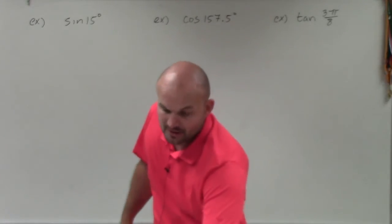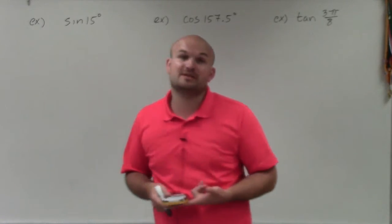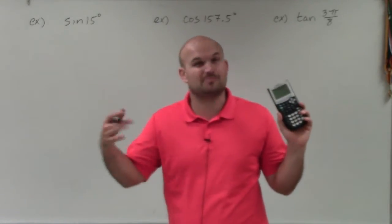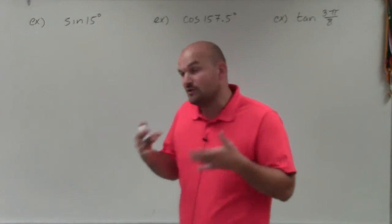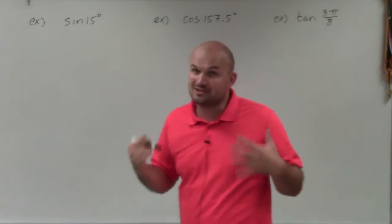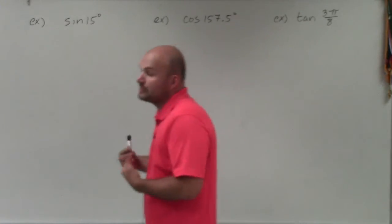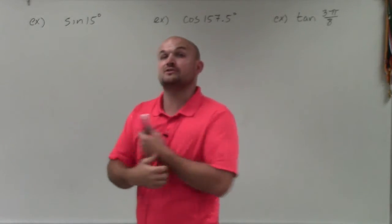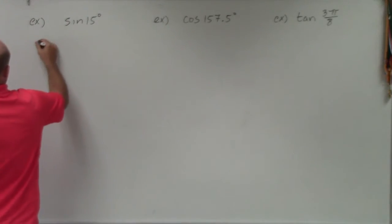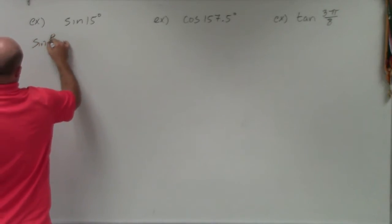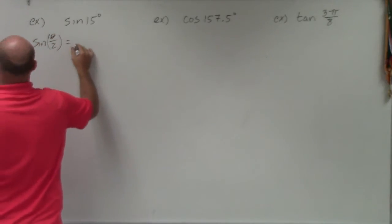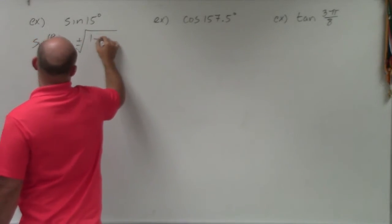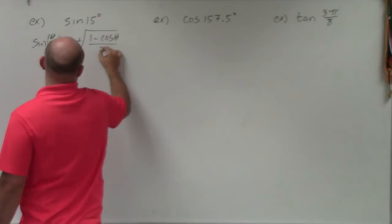So typically, either we could use sum and difference formulas, we could use double angle formulas, or we could plug it into our calculator to get the approximate answer. But if those don't work and we still need to get the exact answer, then we're going to want to use our half-angle formulas. The half-angle formula for sine is: sine of theta divided by 2 equals plus or minus the square root of 1 minus cosine of theta, divided by 2.